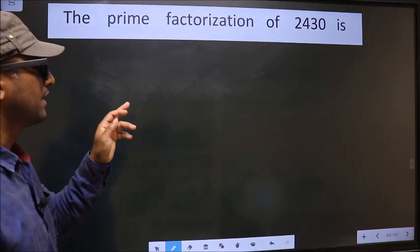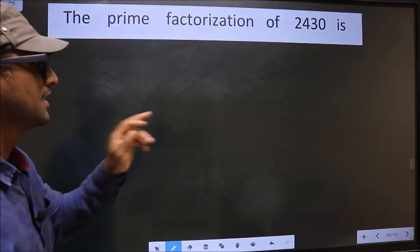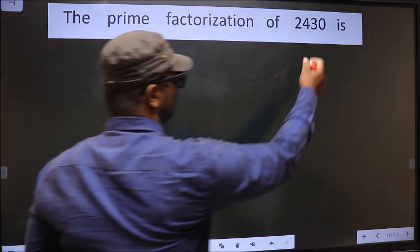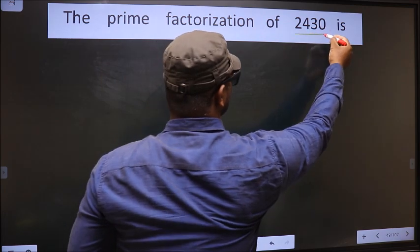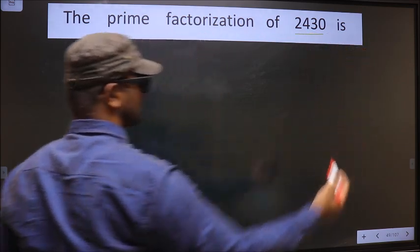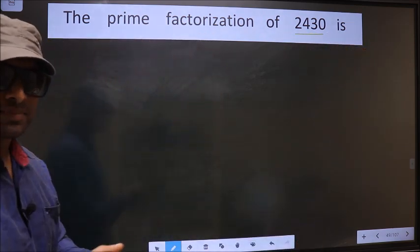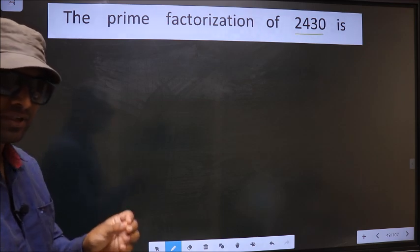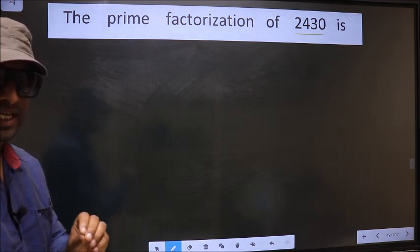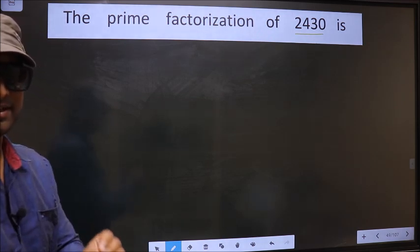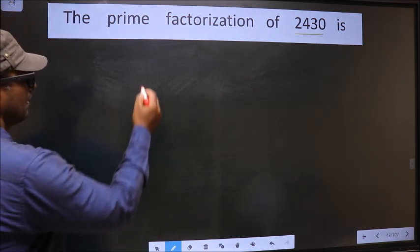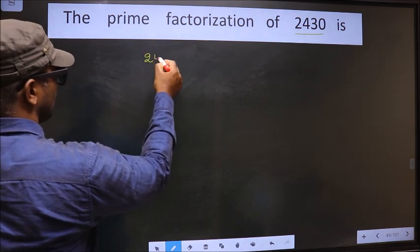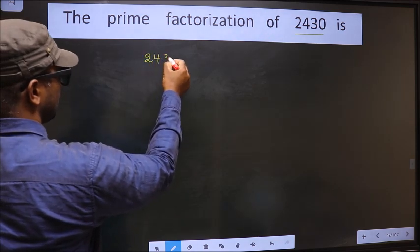The prime factorization of 2430 is — to do the prime factorization, first we should frame it in this way, that is 2430.